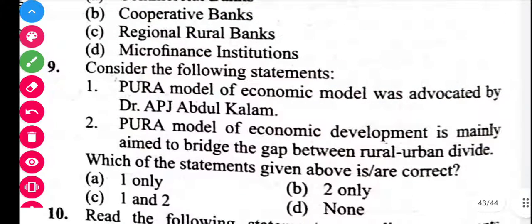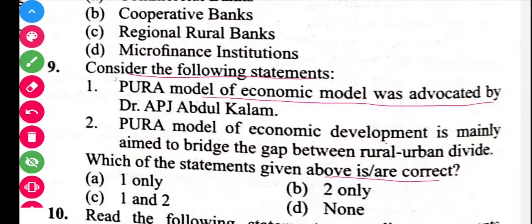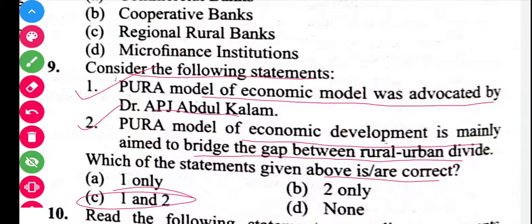Next question is related to the PURA model. The PURA model of economic development was advocated by Dr. APJ Abdul Kalam. The PURA model is mainly aimed at bridging the gap between rural and urban areas. Both statements are correct, so the answer is C.